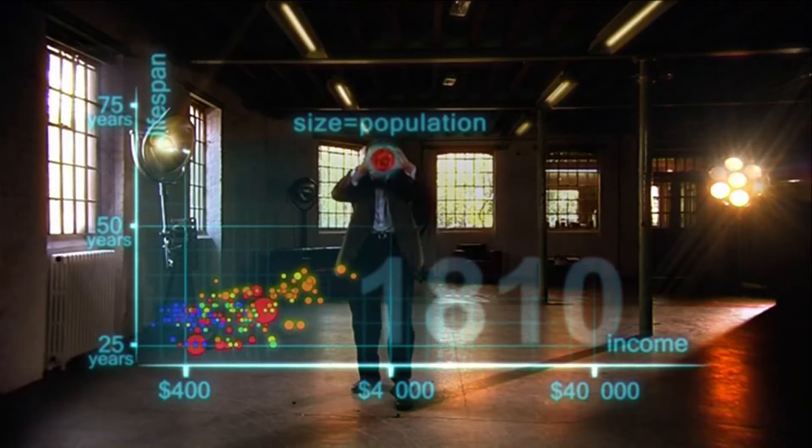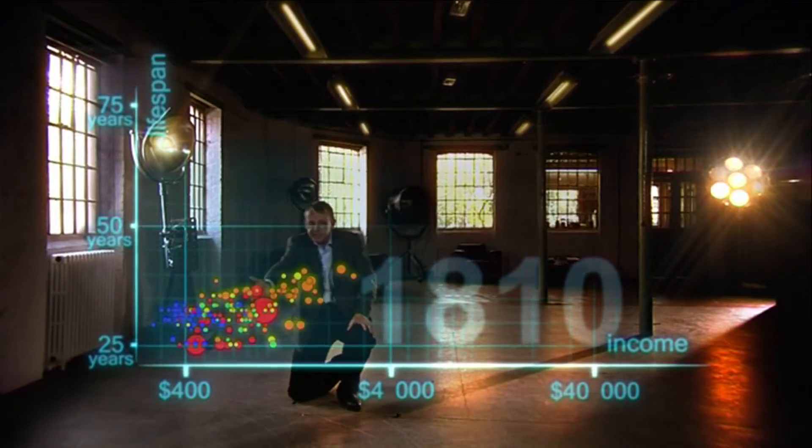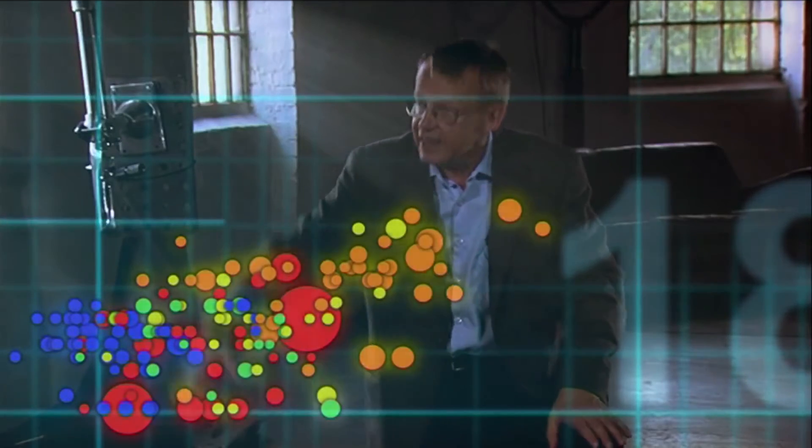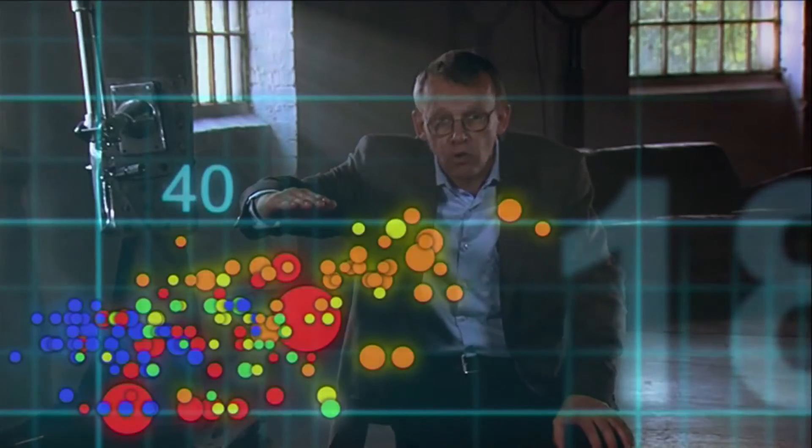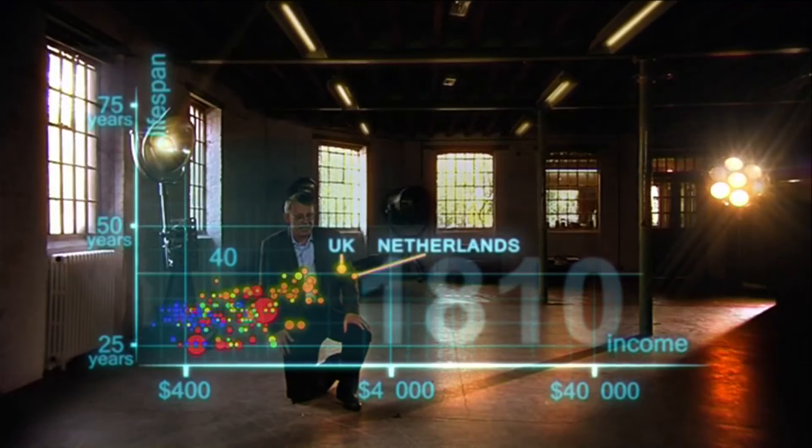And the size of the country bubble shows the size of the population. And in 1810, it was pretty crowded down there, wasn't it? All countries were sick and poor. Life expectancy was below 40 in all countries. And only the UK and the Netherlands were slightly better off. But not much.